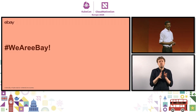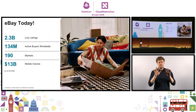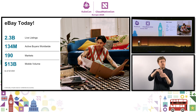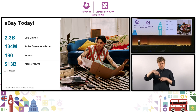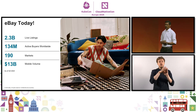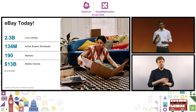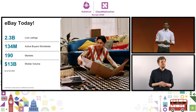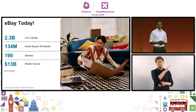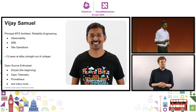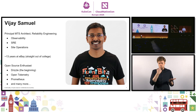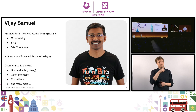I keep saying we — who are we? We are eBay. eBay today is present in 190 markets with 2.3 billion live listings, 134 million active buyers worldwide, and the volume of money we transact just on mobile devices is roughly 13 billion dollars. Who am I? My name is Vijay Samuel. I'm a principal MTS architect for the Reliability Engineering Organization at eBay.